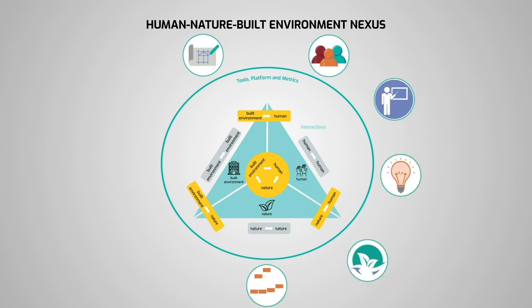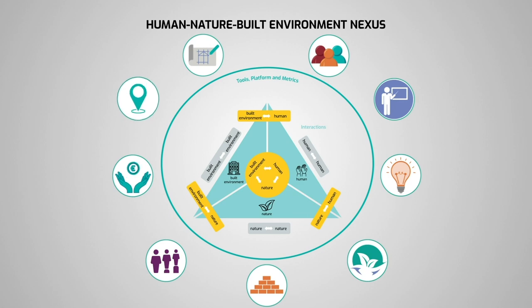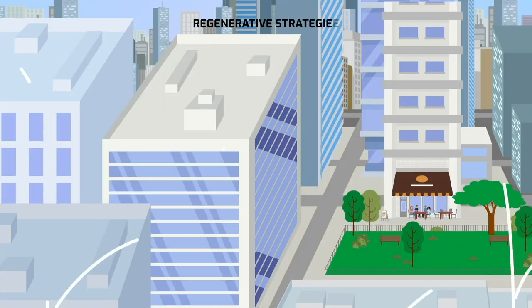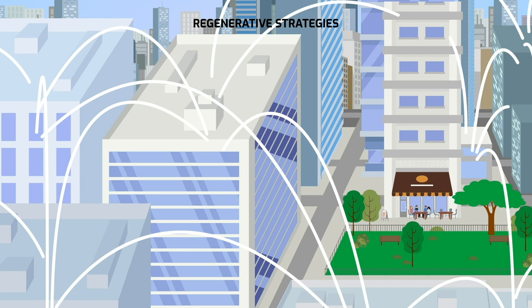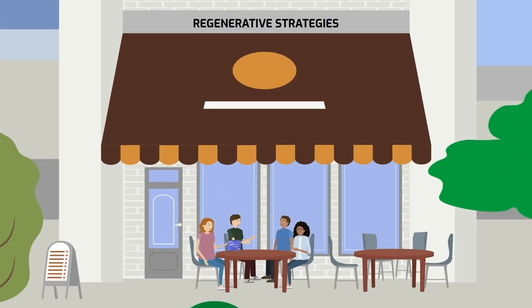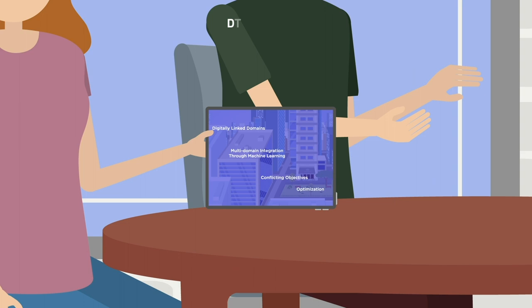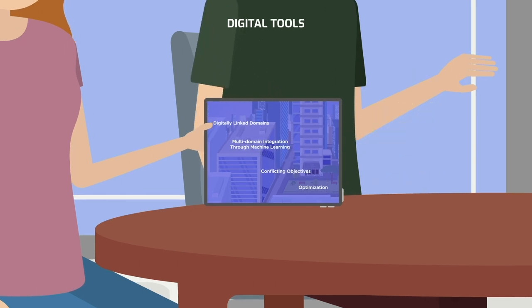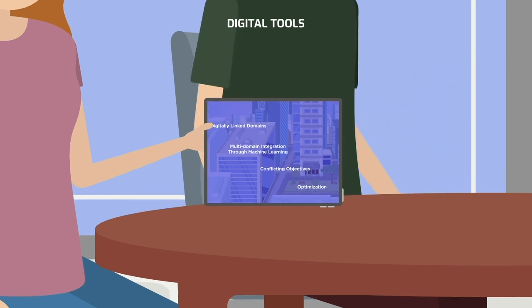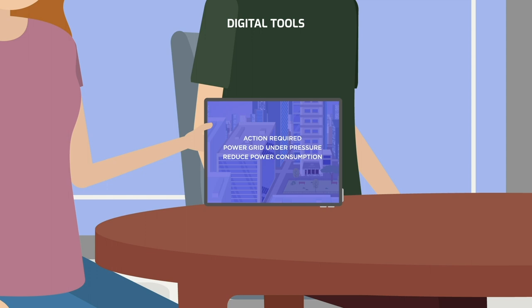Scale-jumping regenerative strategies can be designed using digital tools, platforms, metrics, and practices. Digital tools connecting the domains of the human-nature-built environment can be used to manage data and identify and address problems across interactive domains. This data can also be used to identify solutions.